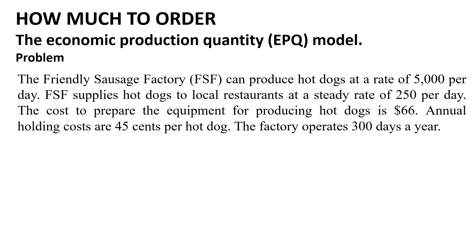The Friendly Sausage Factory (FSF) can produce hot dogs at a rate of 5,000 per day. FSF supplies hot dogs to local restaurants at a steady rate of 250 per day. The cost to prepare the equipment for producing hot dogs is $66. Annual holding costs are $0.45 per hot dog. The factory operates 300 days a year.